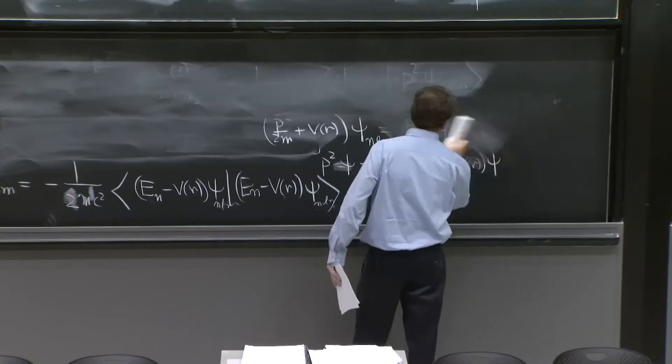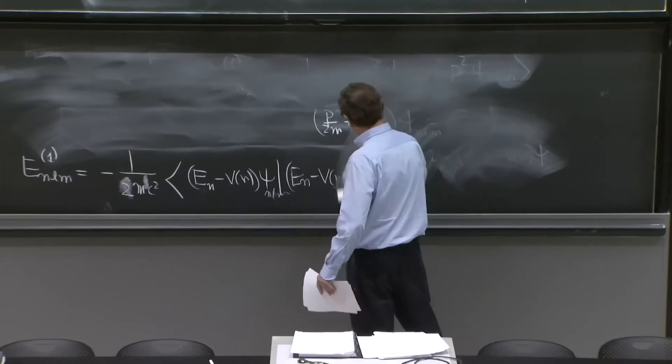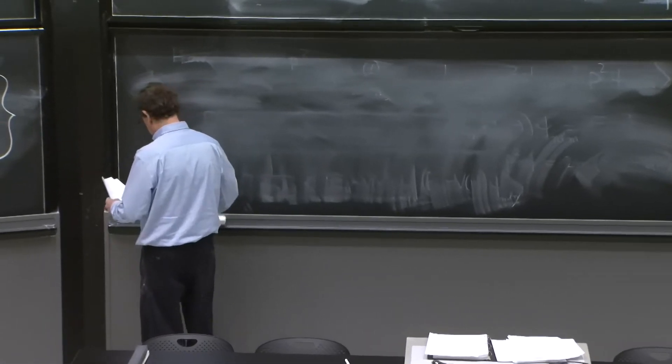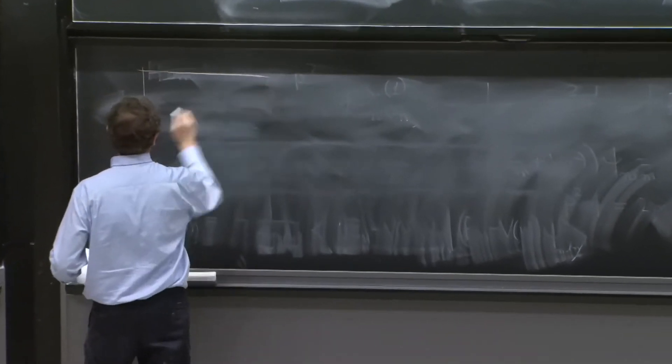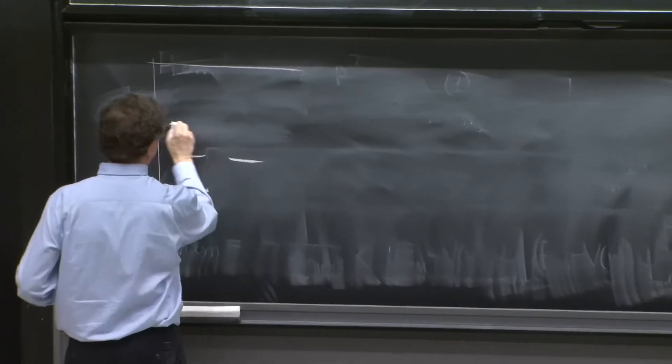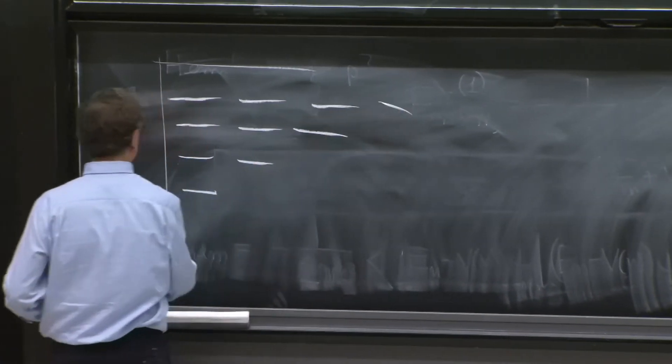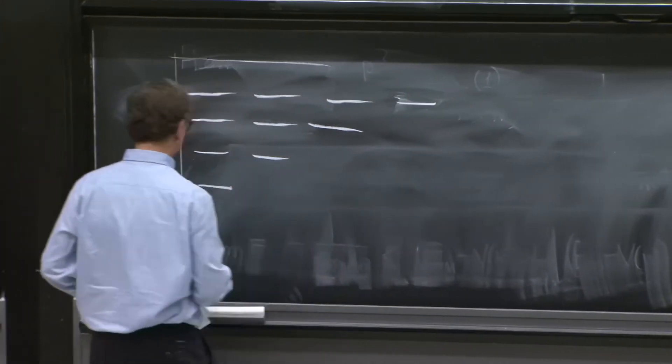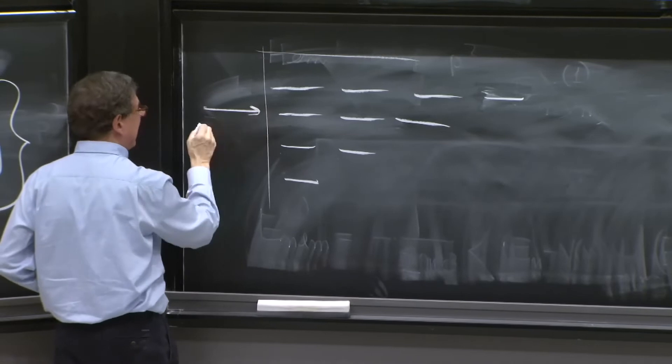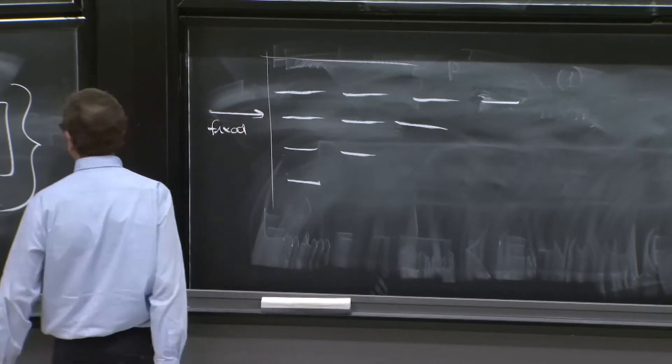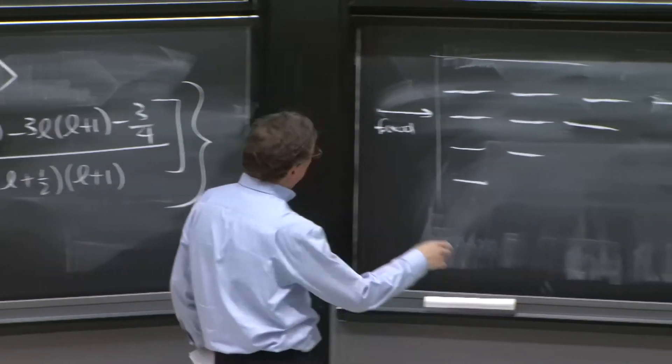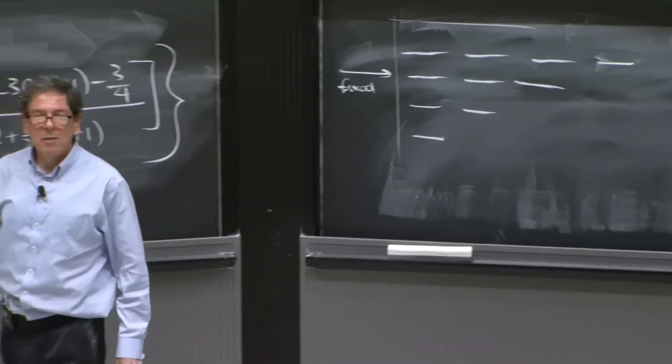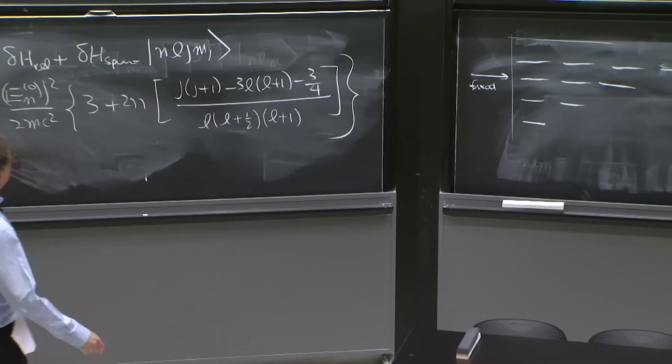And for this, as we said in the coupled basis, the degeneracies happen for a given value of n. So I'm getting good at doing this diagram. So we're looking at the fixed n. And then you have all kind of degenerate states for various l's and j's. So is there a better way to rewrite this formula?